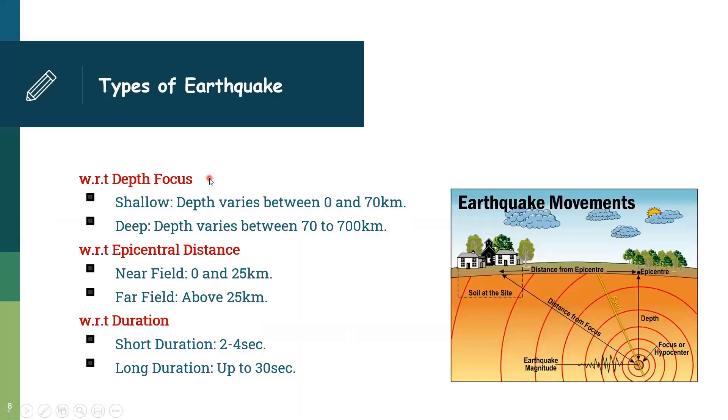So what are the types of earthquakes? The earthquake can be categorized based on the depth, can be categorized based on the epicentral distance and the duration. The depth is shallow between 0 to 70 kilometer, deep between 70 to 700 kilometer, and can be near field and far field, short duration and long duration. There's another type of earthquake like volcanic earthquake, explosion earthquake, and something called tectonic earthquake, and also collapsed earthquake. Different definitions.